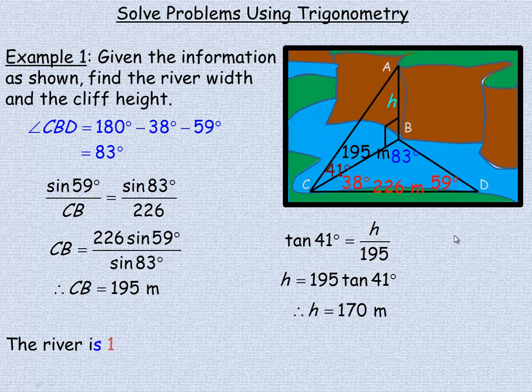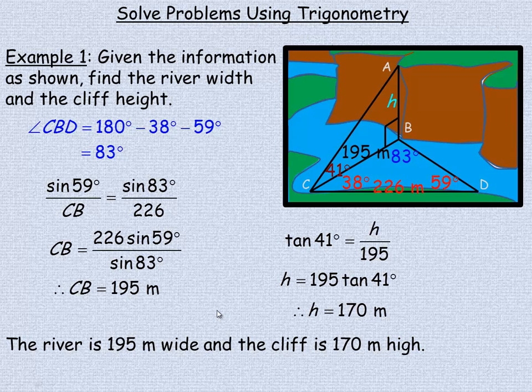So this cliff is 170 meters high. Answering the two questions, the river is 195 meters wide and the cliff is 170 meters high.